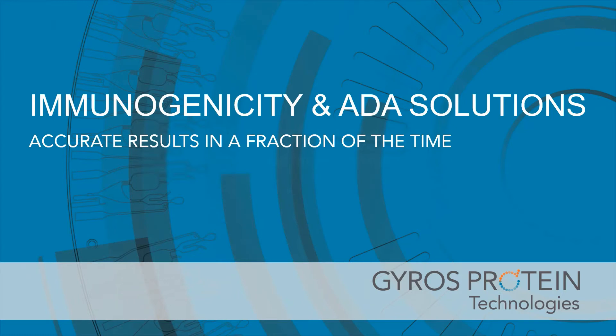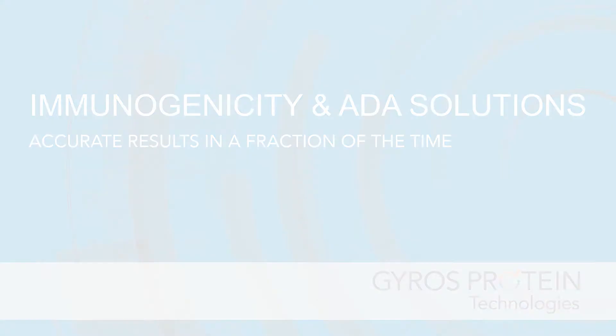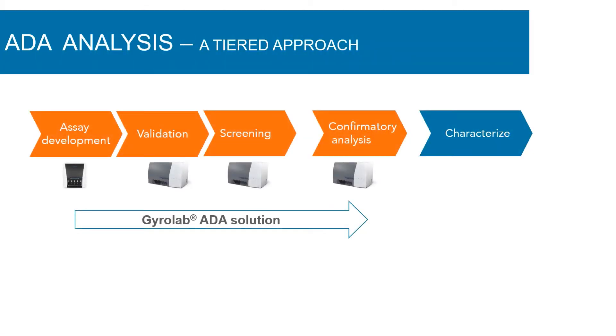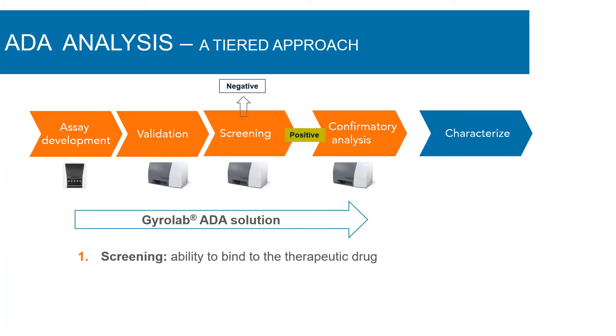Gyrolab immunogenicity and ADA immunoassay solutions produce accurate results in a fraction of the time. A screening assay measures antidrug antibodies, or ADA, in serum compared to negative controls, then a confirmatory test is completed.